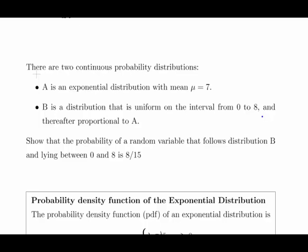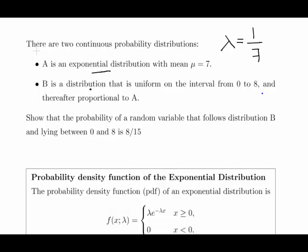There are two continuous probability distributions. A is an exponential distribution with mean μ equals 7. Now that's exponential, so we should immediately consider that if μ is 7, then lambda is 1 over 7.